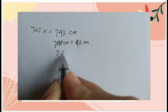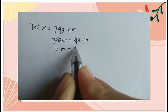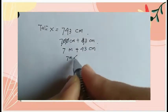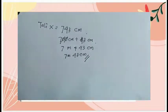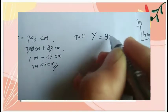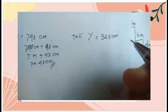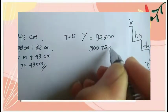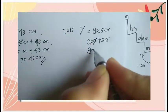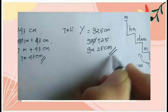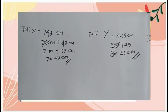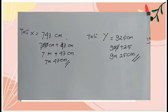Jadi 700 cm menjadi 7 meter. Kemudian kita jumlahkan dengan 43 cm. Jadi hasilnya 7 meter 43 cm untuk tali X. Sekarang tali Y, yaitu 925 cm — 900 ditambah 25 cm. Naik dua tangga, kita coret dua nol, sisa 9 meter 25 cm. Jadi tali X adalah 7 meter 43 cm dan tali Y adalah 9 meter 25 cm.